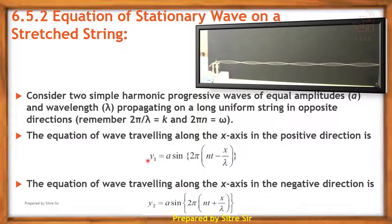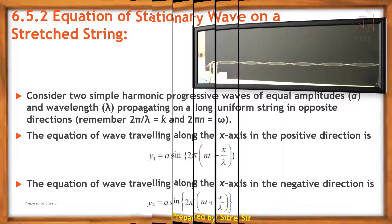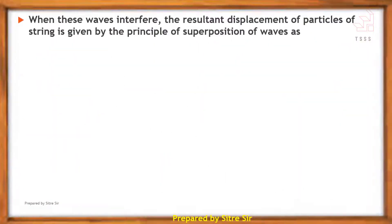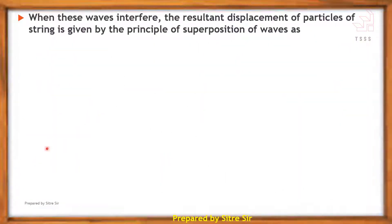Equation of the first wave is y1; equation of the second wave is y2, traveling in the opposite direction. When these waves interfere, the resultant displacement of a particle of the string is given by the principle of superposition of waves.